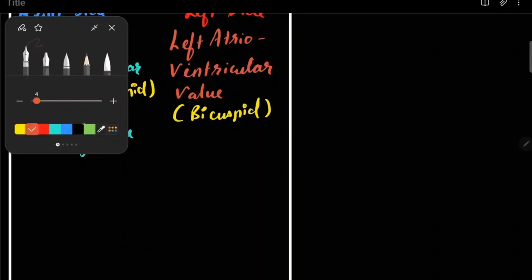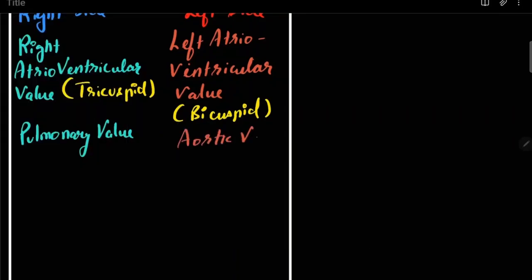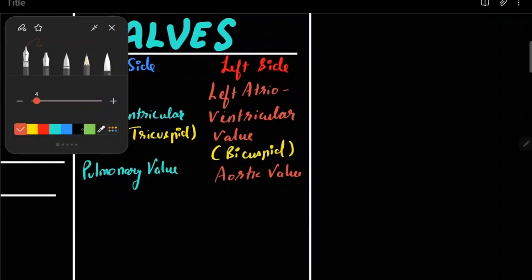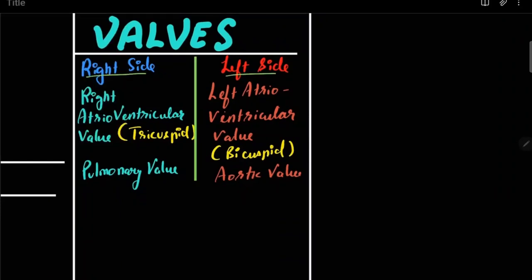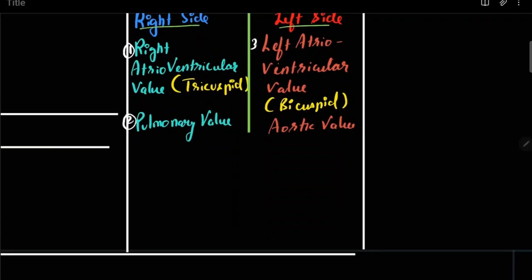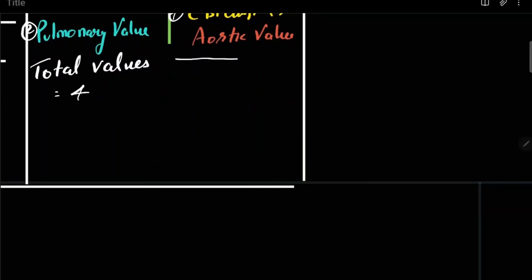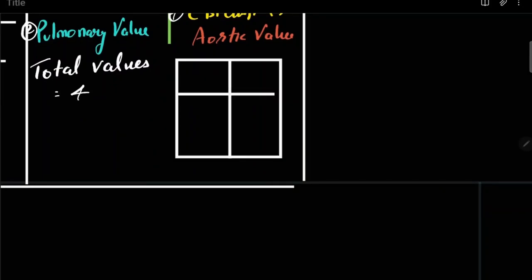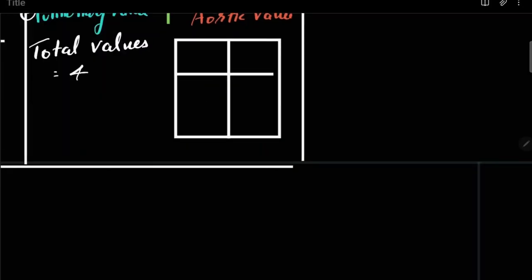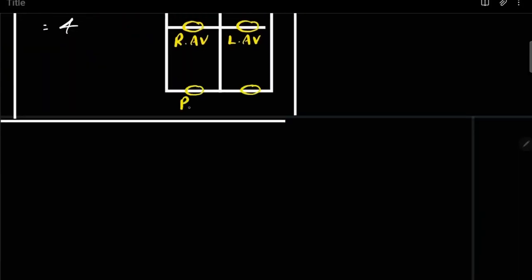Between the left ventricle and aorta you have your aortic valve. So in total you have four valves: two on the right side and two on the left side. With the help of a box diagram we can easily understand — two between atria and ventricles, and two between ventricles and blood vessels.